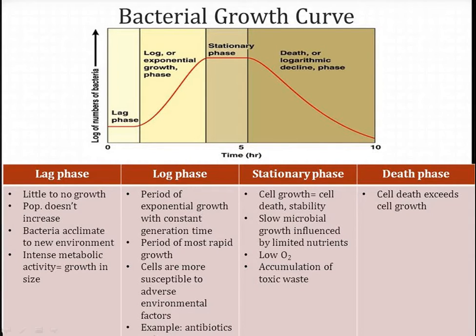The lag phase is the time when cells increase in size but there is no multiplication. Cells adapt to the environment and it is a period of rapid metabolic activity, but cells do not divide. Enzymes and intermediates are produced, accumulate, and prepare the cell for division. The second is the log or exponential phase, in which the number of cells increases exponentially with respect to time — cells double with each doubling time. The average time for the population or biomass to double is known as generation time or doubling time.